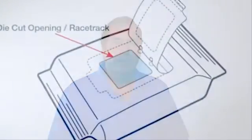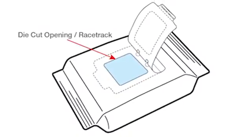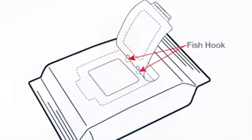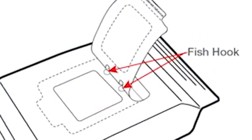The die cut on the flow wrap is the opening where you get the contents out of the package, sometimes referred to as the racetrack. There are jade hooks that are cut into the label material itself that serve as a hinge, and they are referred to as fish hooks.